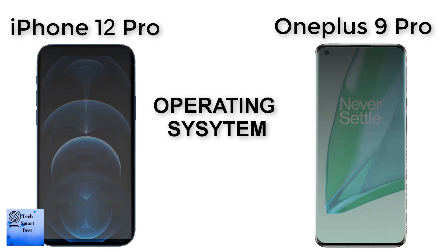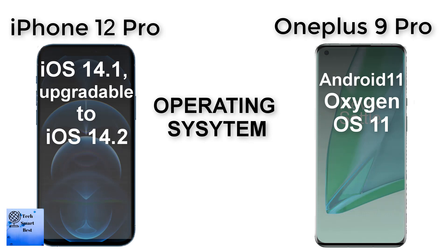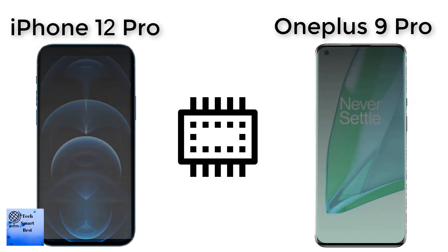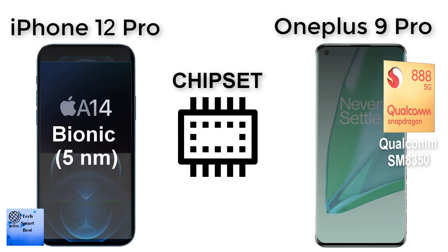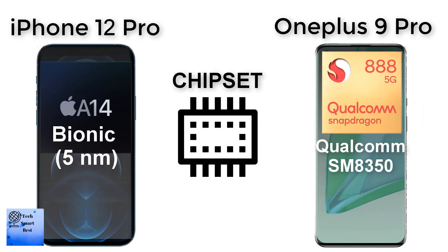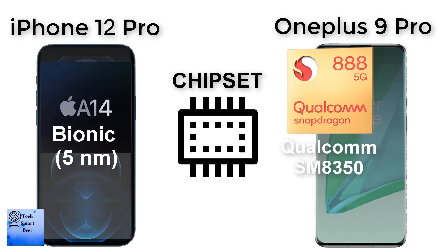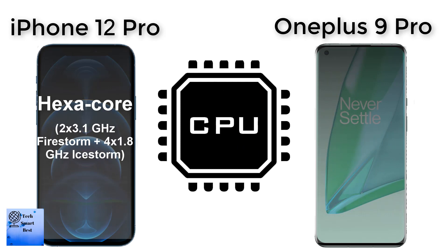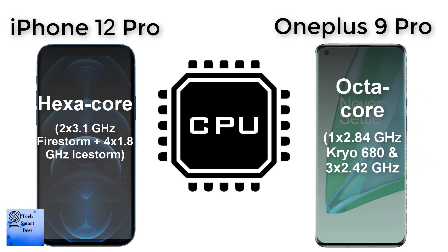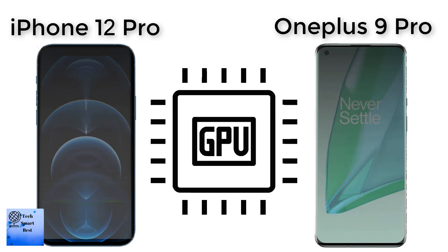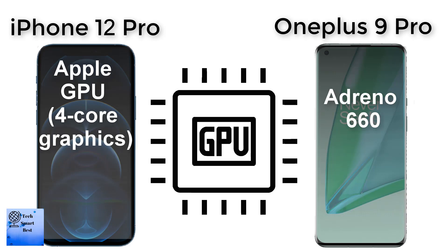The platform comparison between both smartphones. The operating system of the OnePlus 9 Pro is Android 11 OxygenOS 11. The operating system of the Apple iPhone 12 Pro is iOS 14.1, upgradable to 14.2. The chipset of the OnePlus 9 Pro is Qualcomm SM8350 Snapdragon 888, and the Apple iPhone 12 Pro uses the Apple A14 Bionic. The CPU of the OnePlus 9 Pro is octa-core, and the Apple iPhone 12 Pro is hexa-core. The GPU of the OnePlus 9 Pro is Adreno 660, and the Apple iPhone 12 Pro uses Apple GPU 8-core graphics.